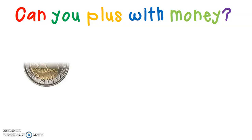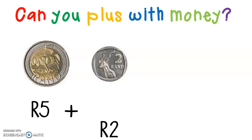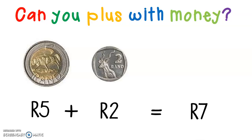Let's have a look at our next sum. Here we have a 5 Rand and a 2 Rand. Can you tell me what my sum will be? It is 5 Rand plus 2 Rand. Let's quickly add it together — we've got 5 and we're going to carry on counting: 5, 6, 7. I added 2, so my answer is 7 Rand. Well done Grade 2s.